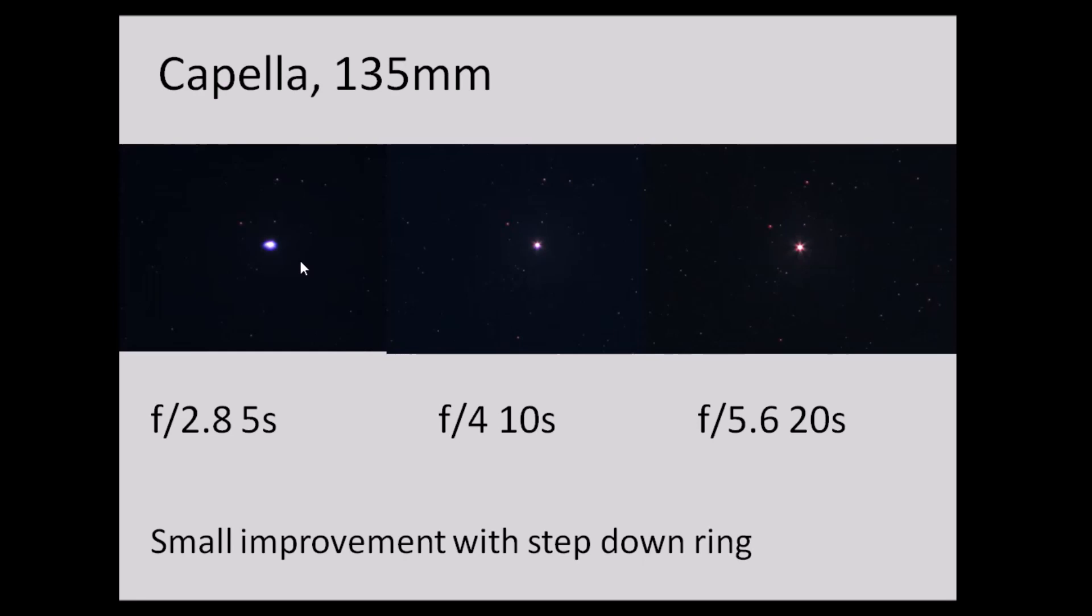So I tried putting a step down ring on the front of the lens, on the filter ring, in place of using the aperture inside the lens, instead of using the iris to step it down. And there was some small improvement to the image quality, but not a huge amount.